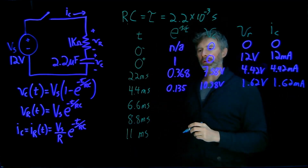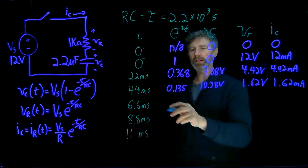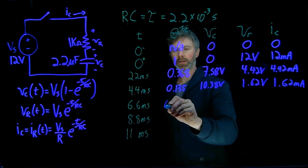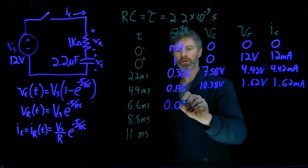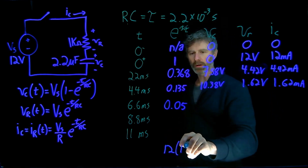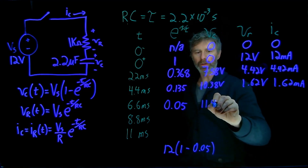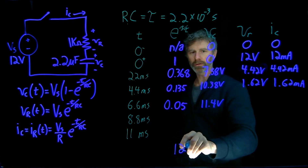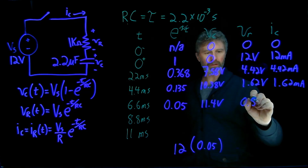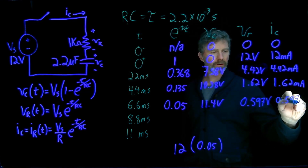At 6.6 milliseconds, we have 6.6 over 2.2, so e to the negative 3 is 0.05. For Vc, we'll have 12 times 1 minus 0.05, which works out to 11.4 volts. For Vr, we'll have 12 times 0.05, and without rounding, we get 0.597 volts — and of course that means 0.597 milliamps.